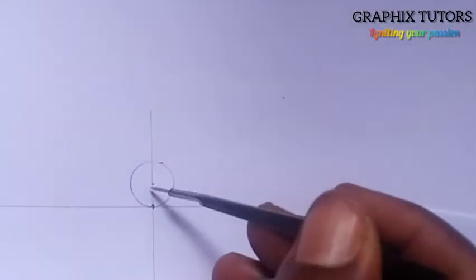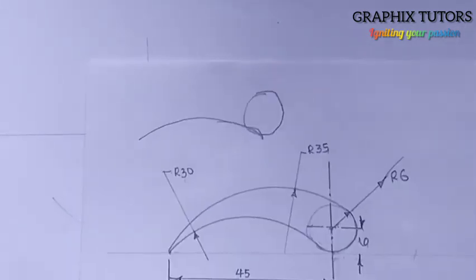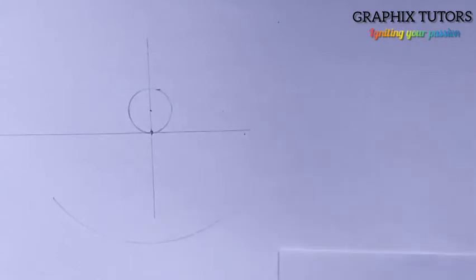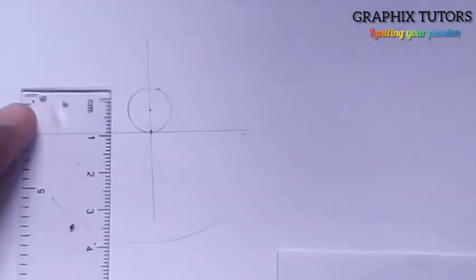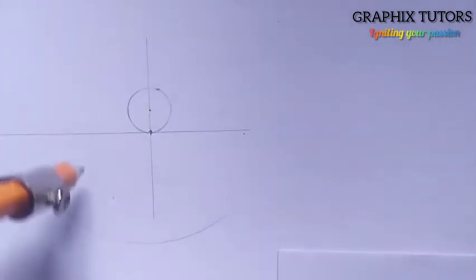I'll place the compass at this center point and strike an arc here. After that, from this other point — since there's no circle there, the radius is zero — zero plus 30 is still 30. So I'll measure 30 on my meter rule and place it at this point, strike an arc, and the arc will cut here.